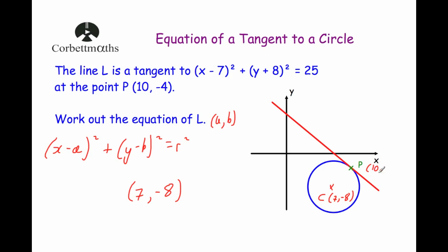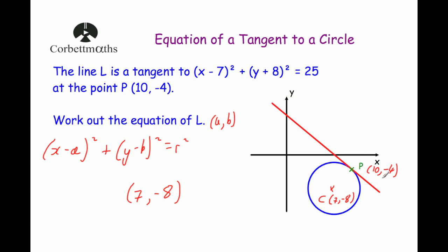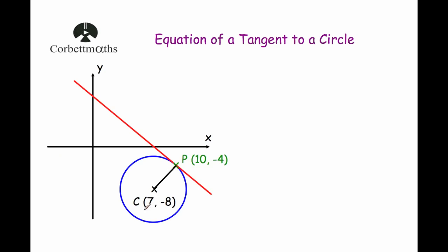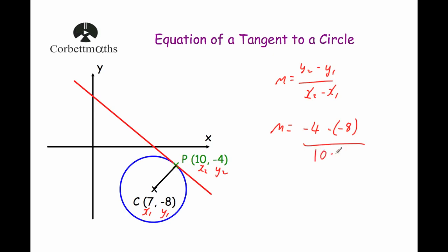Now we know the centre of the circle and the point P (10, −4), so we can work out the gradient of the radius CP. The gradient m = (y₂ − y₁) / (x₂ − x₁). Substituting in: m = (−4 − (−8)) / (10 − 7) = (−4 + 8) / 3 = 4/3. So the gradient of line CP is 4/3.